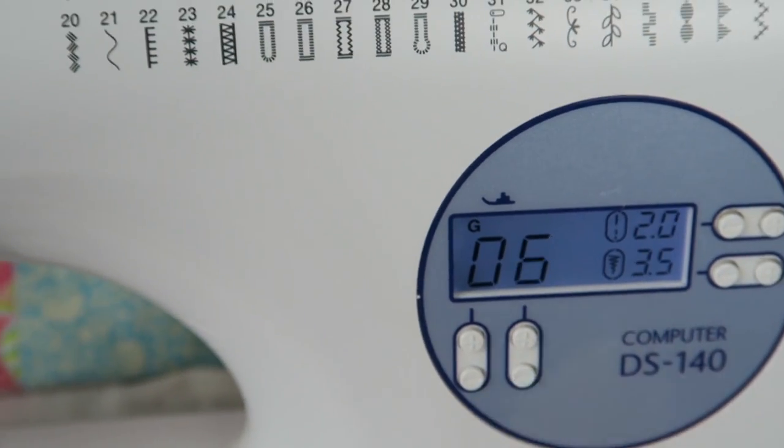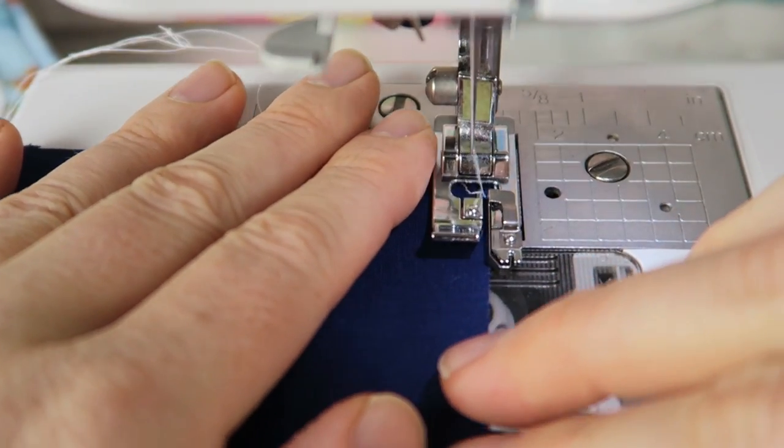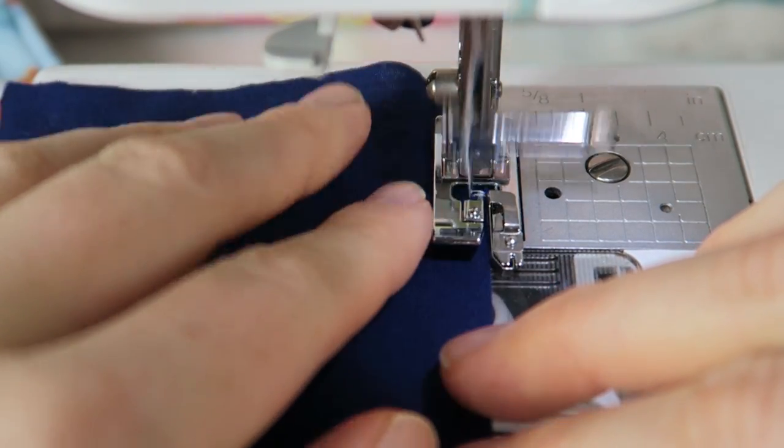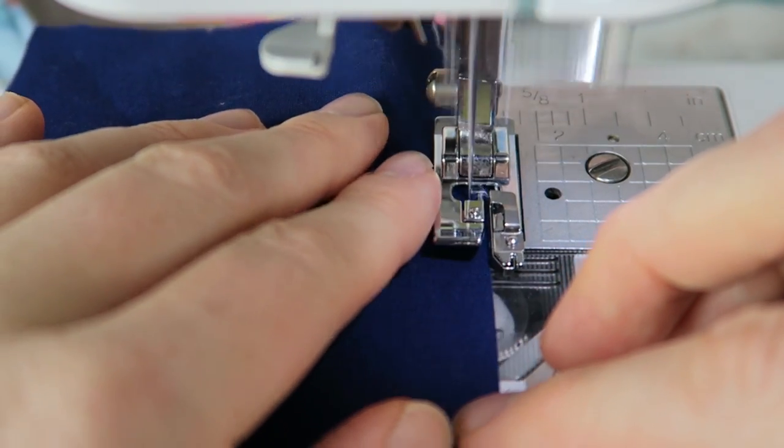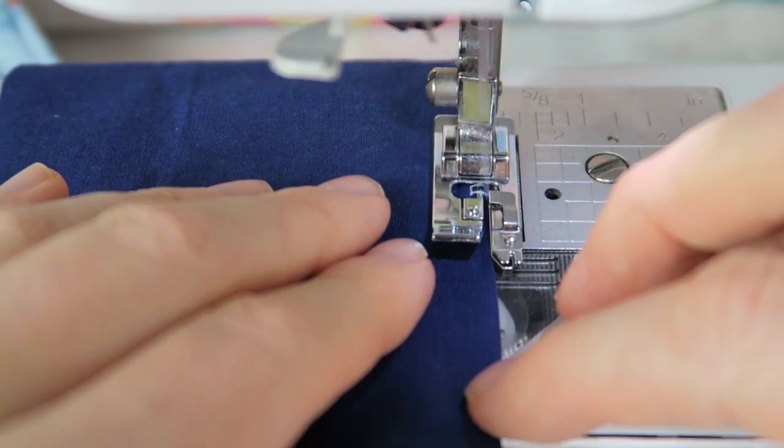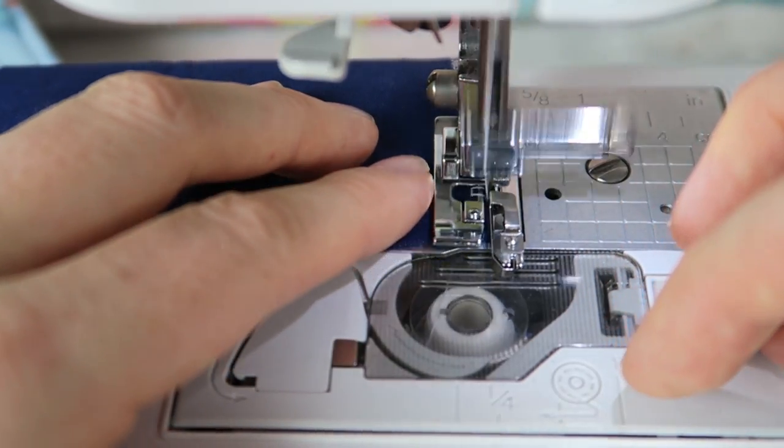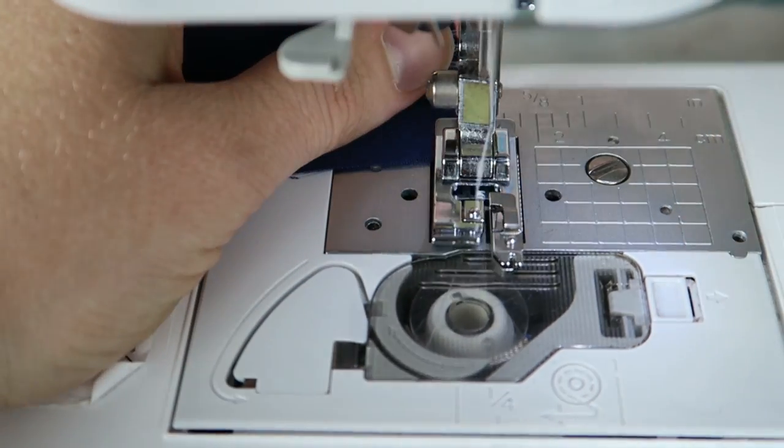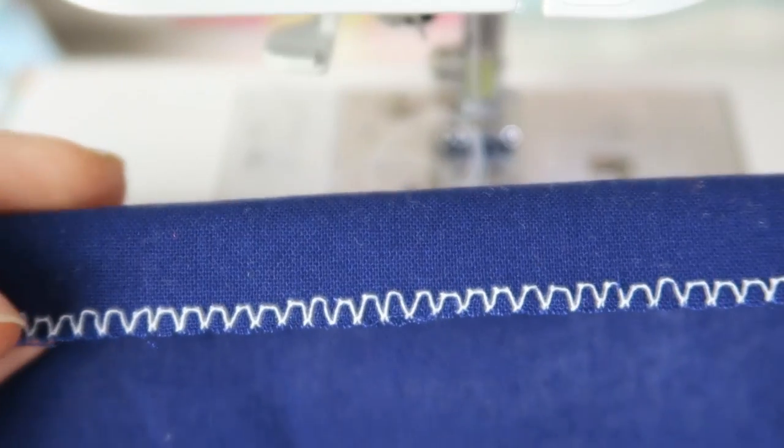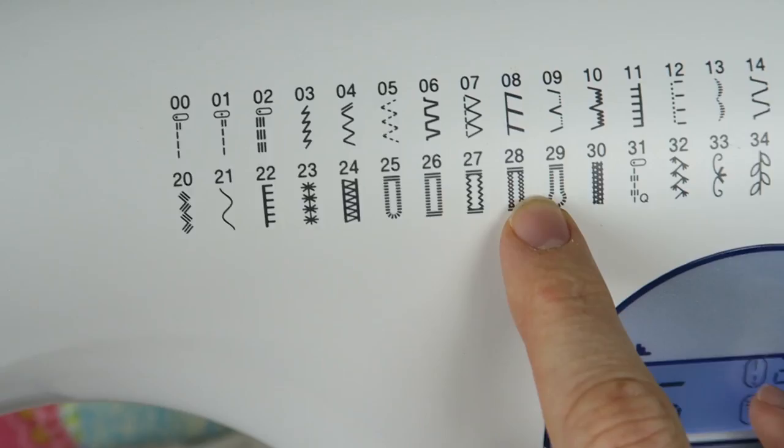Now we can try stitch number six. Do the same thing. The overcasting foot is guiding the raw edge of the fabric, and you make sure that your nice little fabric edge is safe from fraying. So this is what this looks like.